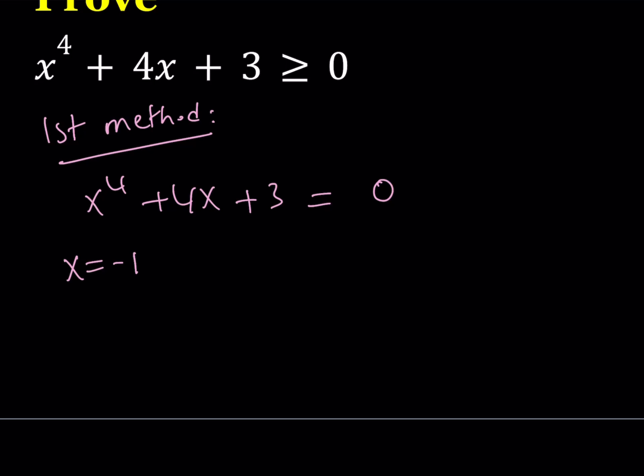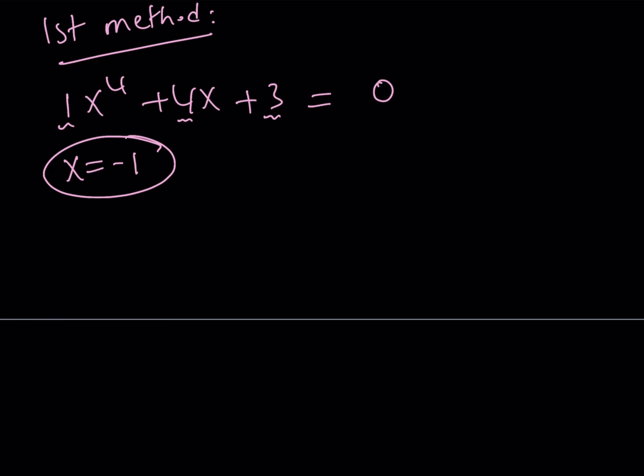When is x equals negative one a solution? When you add the odd coefficients — the odd powers of x — and compare to the even powers of x; if they're equal, then x equals negative one. Here, the coefficient of x to the fourth is one, the constant is three, their sum equals the coefficient of x, which is an odd power. So x equals negative one is a possible solution, and that is going to help us solve this problem. Since we know x plus one is going to be a factor, let's break it down.